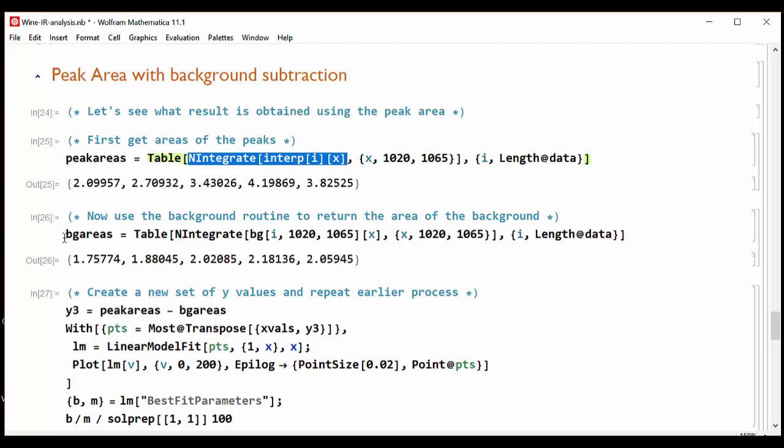And we get areas for each one of the peaks for each one of the concentrations. Likewise, we need to subtract out the background, and we will do so by using the background function, which was just creating the two points line, assuming that the background is linear. And we get a set of background values, background areas.